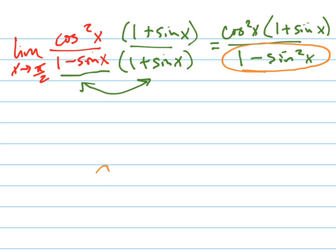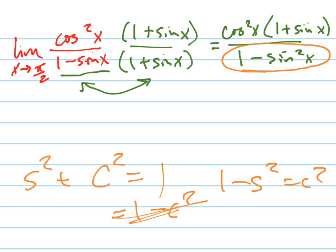Doesn't that look familiar to you? Do you remember sine squared plus cosine squared equals 1? So 1 minus sine squared equals cosine squared. So this thing just equals cosine squared x, which then I can cancel those out. And I just get 1 plus sine of x.